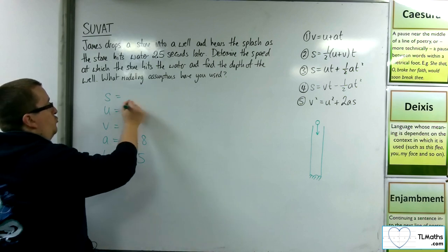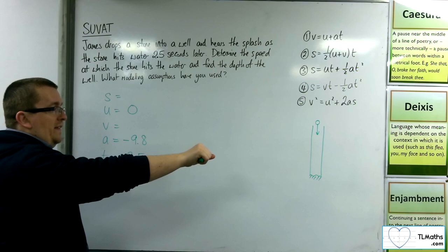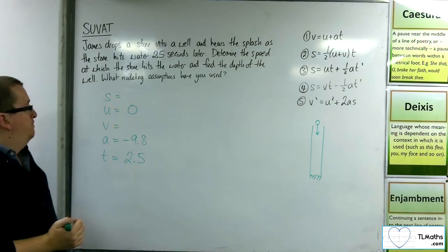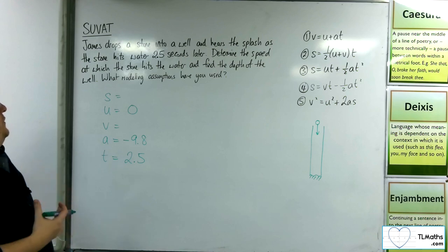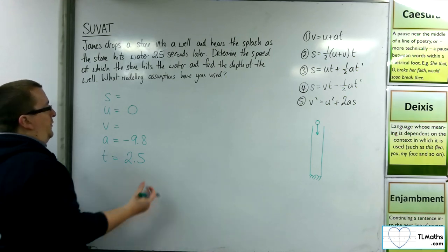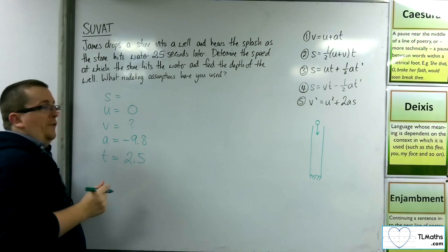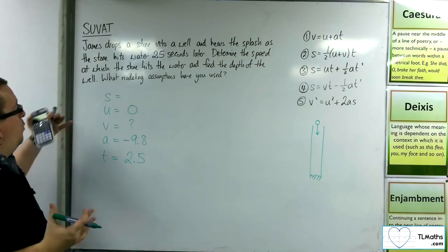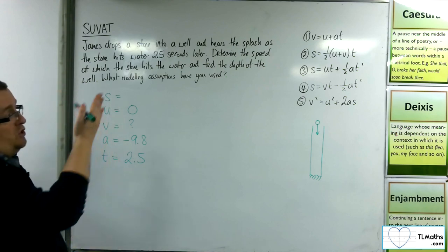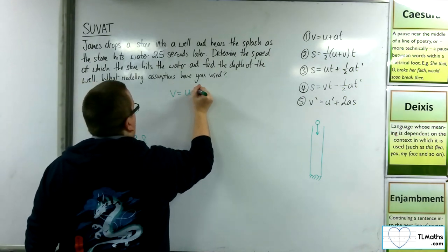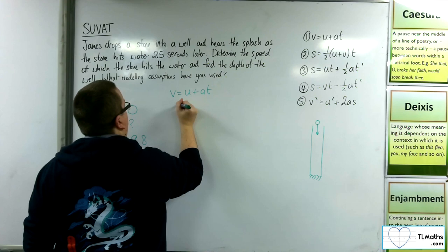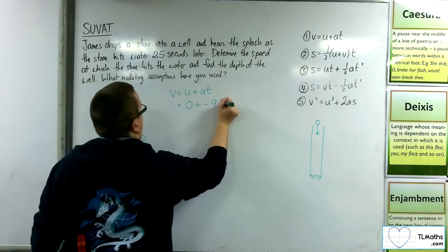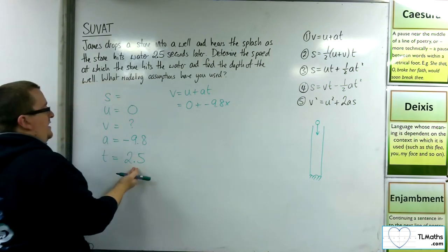So the initial velocity, because I'm just dropping the stone from rest and then dropping it, has an initial velocity of 0 metres per second. So the first thing that we want to find is the speed at which the stone hits the water. So I want to find the final velocity when it hits the water. So the SUVAT equation will be the one that doesn't involve the S, which is number 1. So we're going to go with that. V equals U plus AT. So U is 0, A is minus 9.8, and T is 2.5.